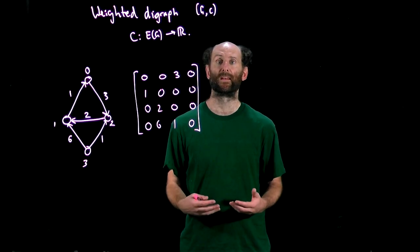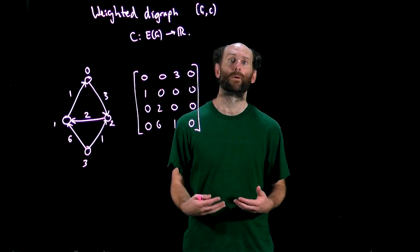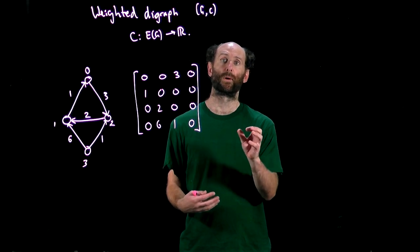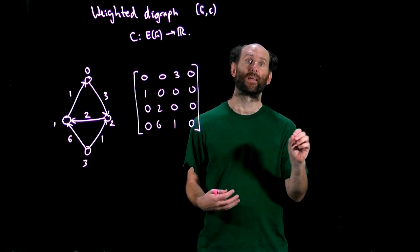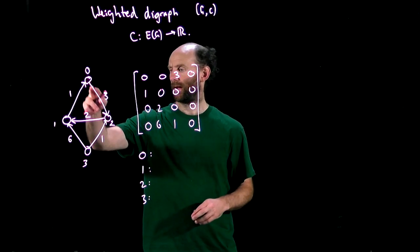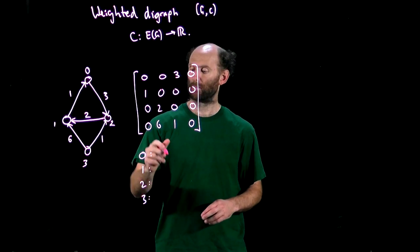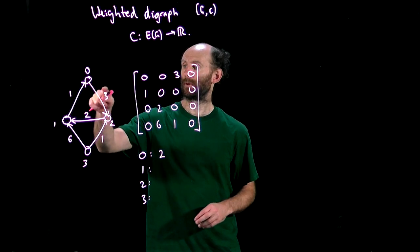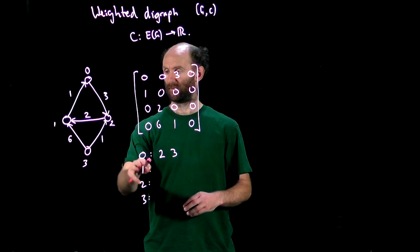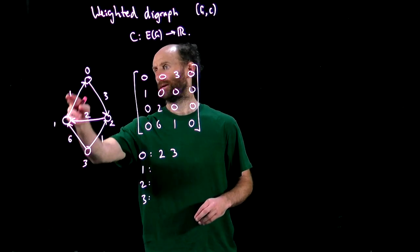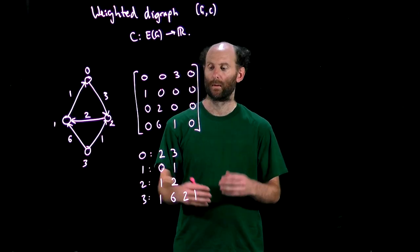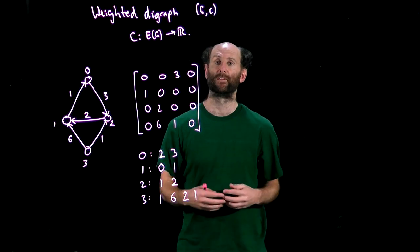In our lectures here we'll use the convention that zero means there is no arc. The adjacency list representation is modified so there are now a list of pairs. The first item in the pair is the out neighbor as before, the second is the cost of the arc leading to that out neighbor. So the first list for node zero has two as an out neighbor so we put in two and then we follow it by the cost of the arc going from zero to two which is three. The second list is for one and we have out neighbor zero at a cost of one.